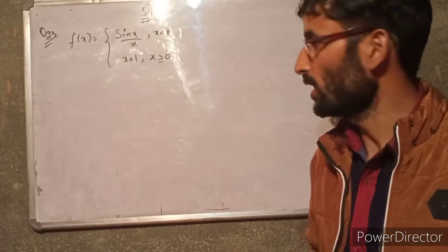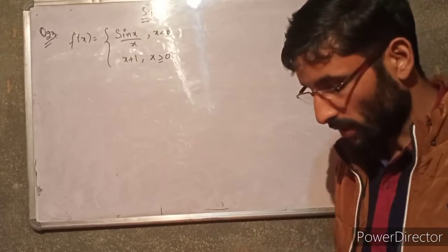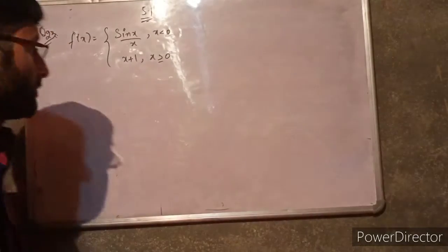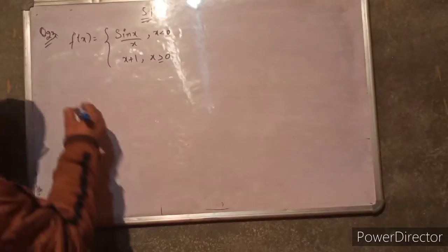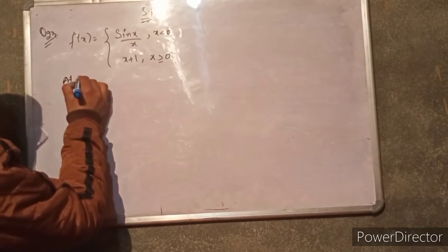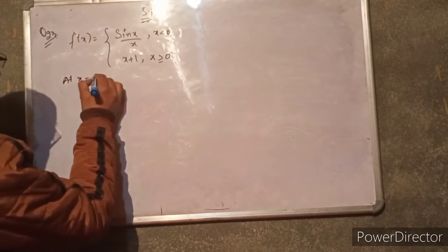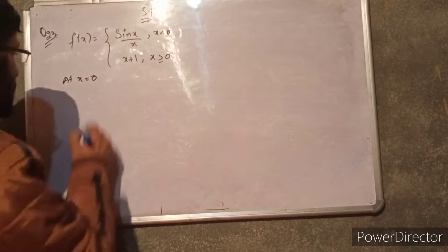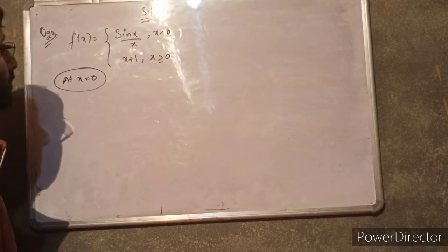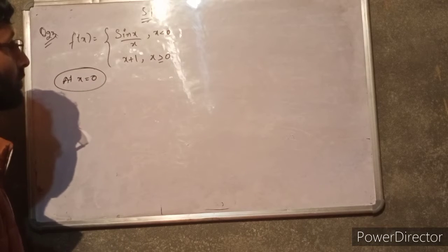f of 0 — when x is equal to 0, we check if it is continuous or not. At x equals 0, this function is continuous.